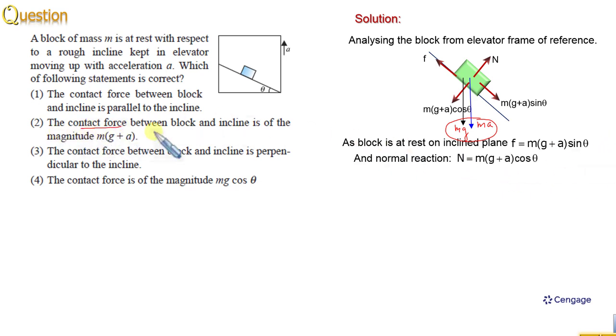Now, we need to find the contact force. Contact force is the vector summation of the normal reaction and friction force. Here we can write N net equal to under root f squared plus N squared.